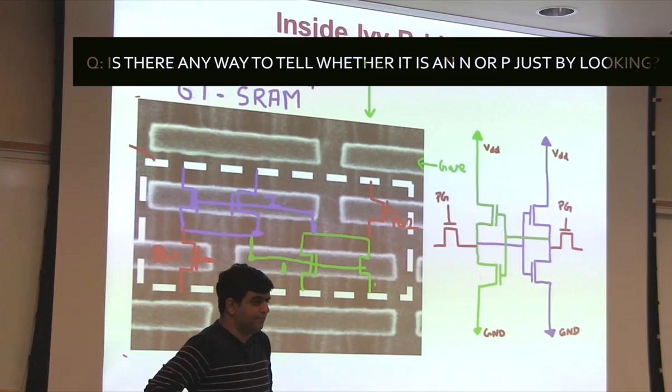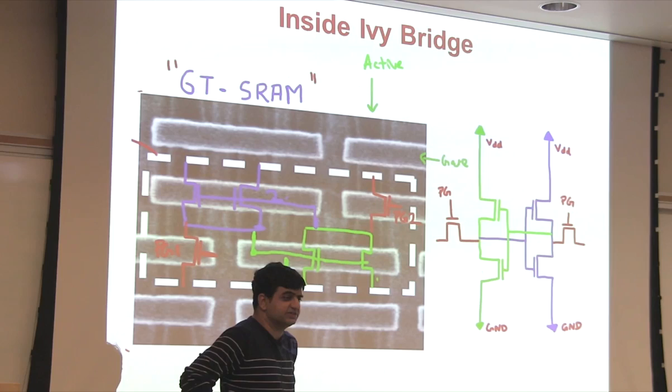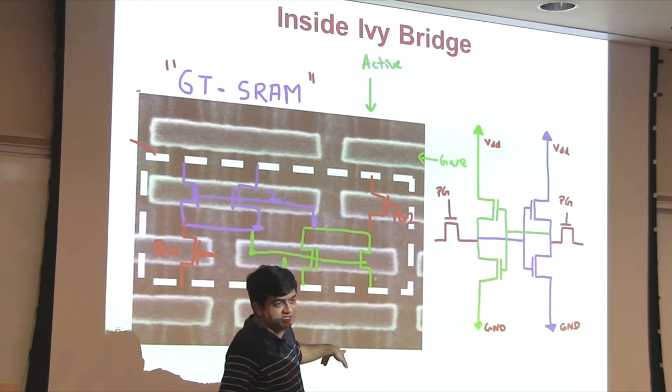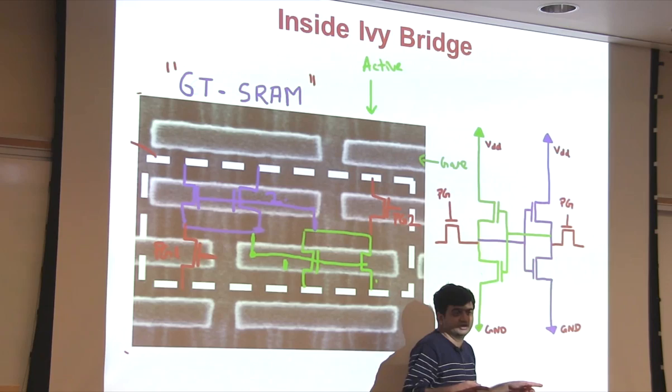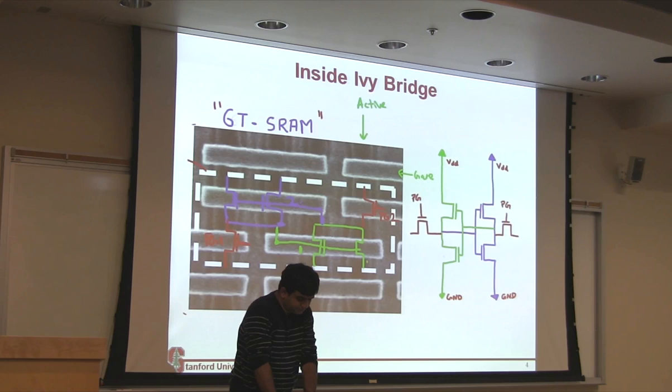Is there a way to identify whether it's an NMOS or PMOS? Just by looking at it? So a cool tip, which is that typically electron mobilities are twice that of hole mobilities, right? So an active line for an NMOS is always thinner as compared to an active line for a PMOS. Because both of them need to have the same amount of current, right? So if the mobility of these two are lower, they need to be wider to support the same amount of current. So you'll always find P lines to be wider and N lines to be thinner. So that's one way you can identify which one is P and which one is N. It's a good question.